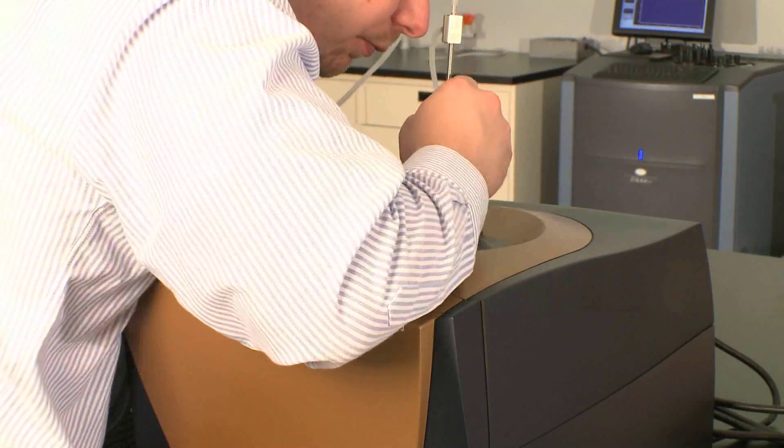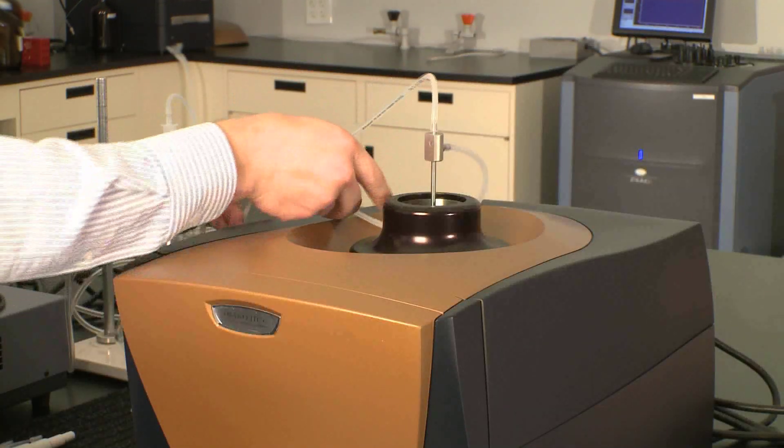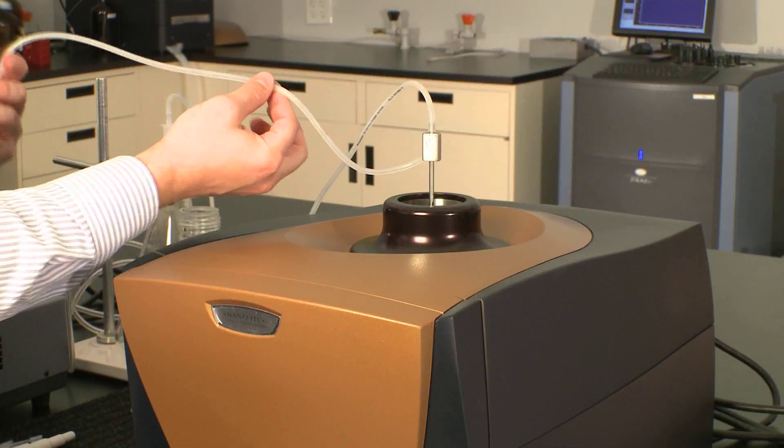You place this inside the instrument down into the cell. You have a connection that goes to your vacuum line, and you have a connection that goes to your cleaning solution.